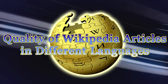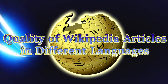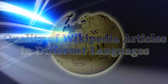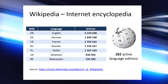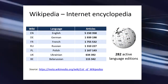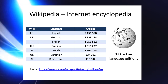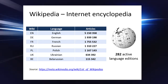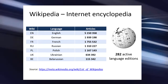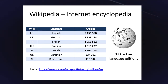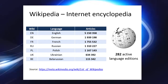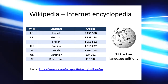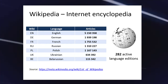This presentation concerns the quality of Wikipedia articles in different languages. Currently there are 282 active Wikipedia language editions. The largest is the English version, which has more than 5 million articles. The first 10 biggest editions also include German, French, Russian, and Polish.